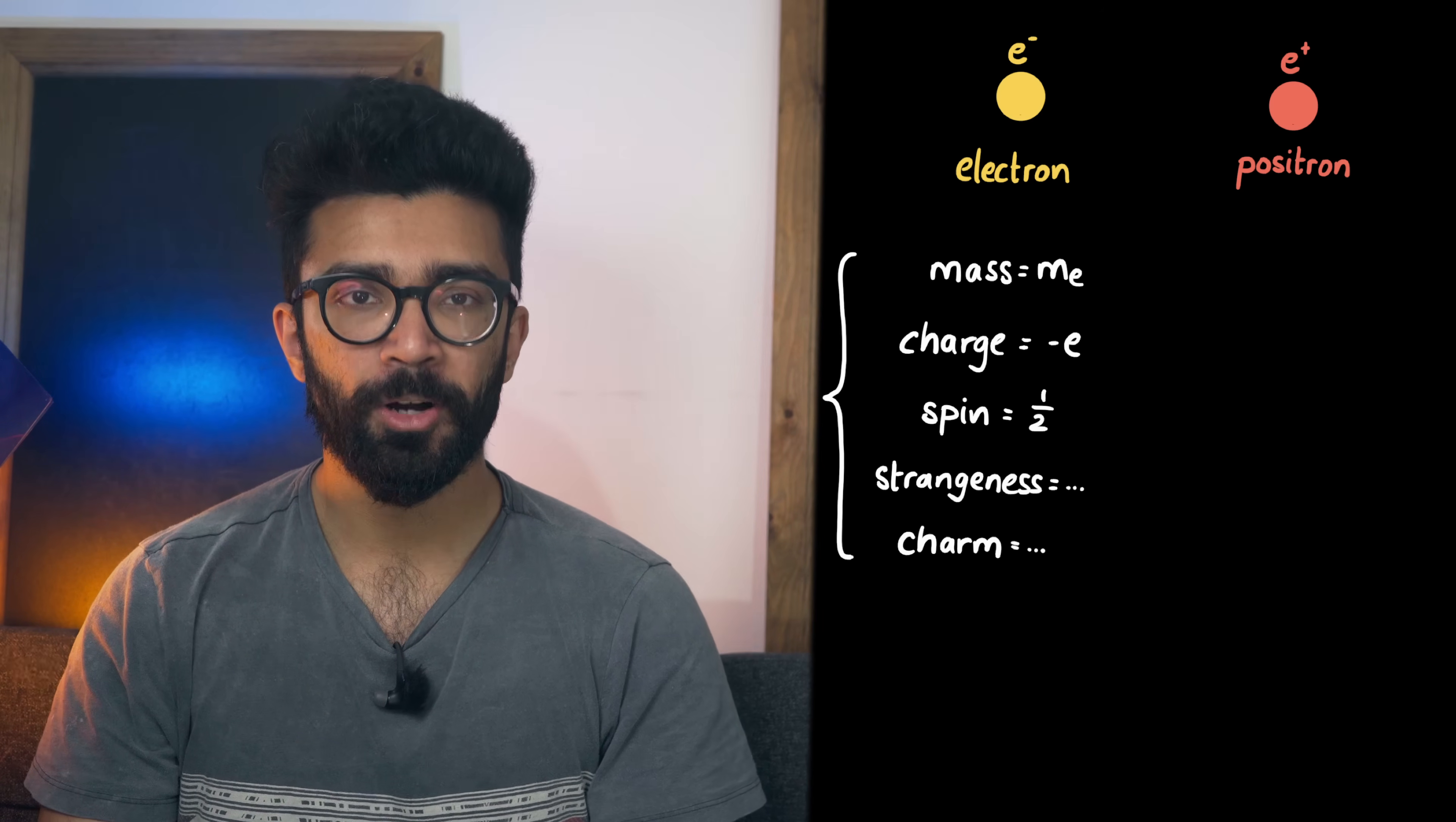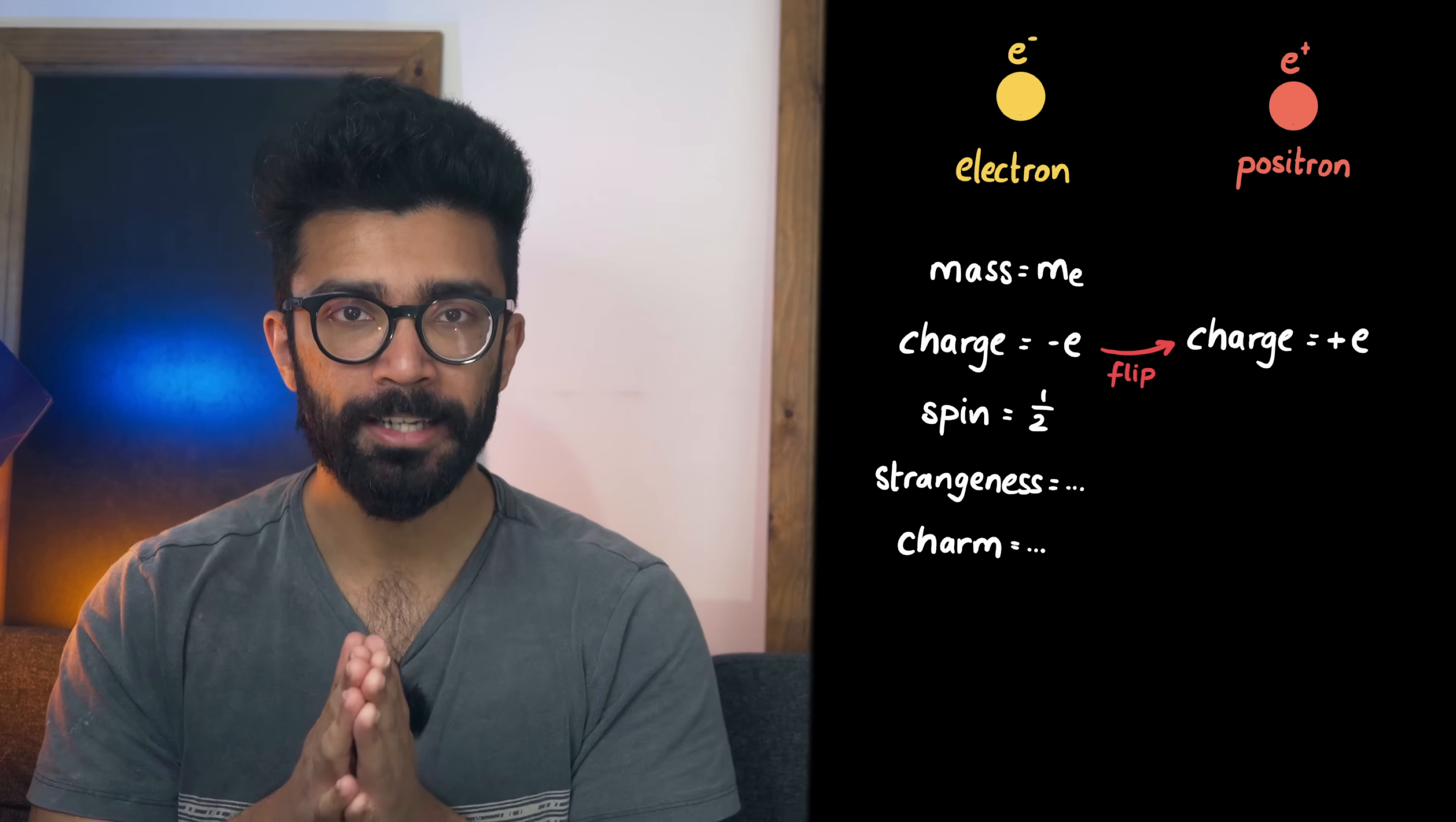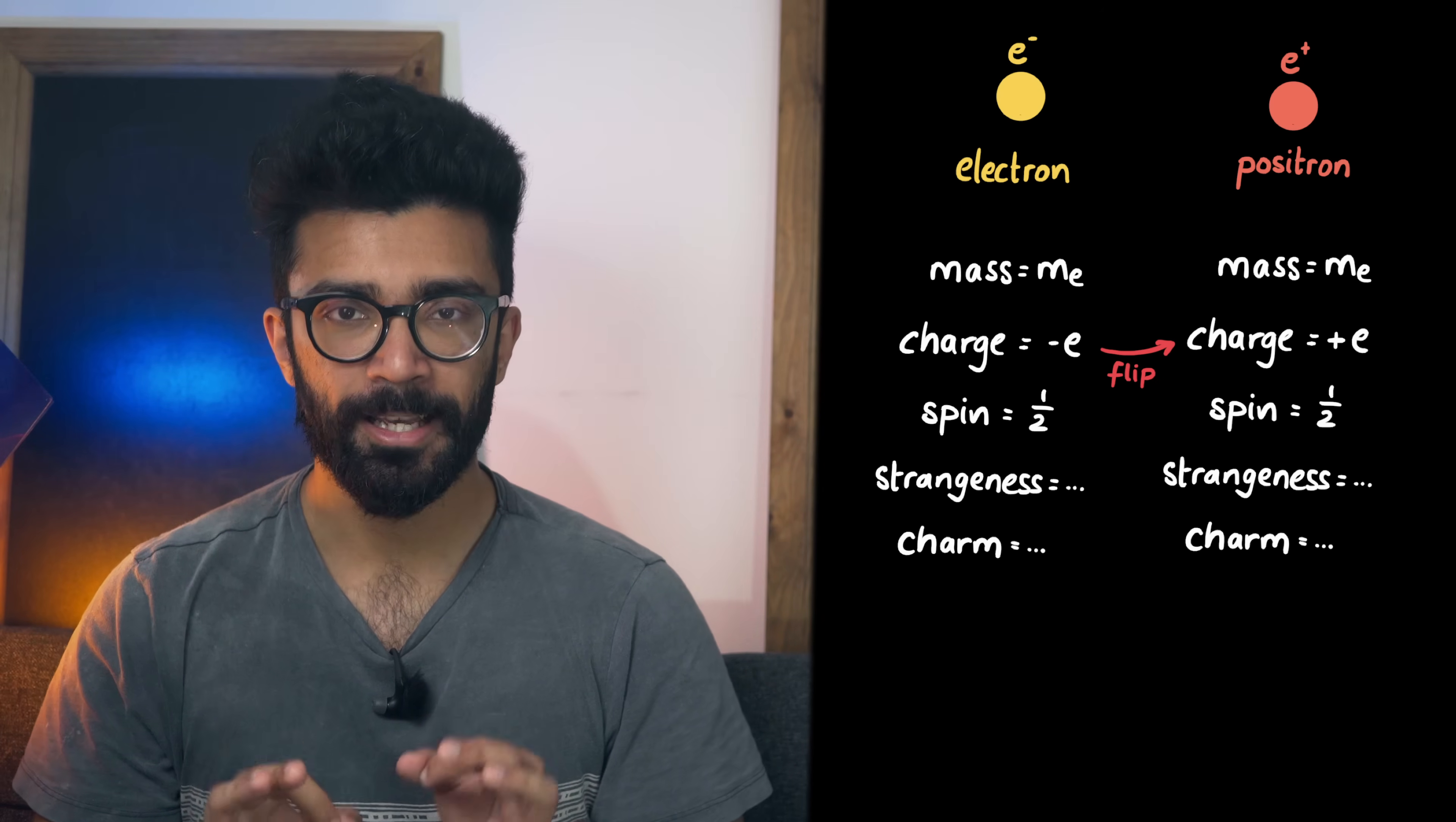But if we take this particle and flip its charge so from positive to negative or from negative to positive with the same magnitude or size then we're looking at a new particle that is known as the anti-particle of the first one. There's a bit more subtlety to it than that but for our purposes that's all that matters here. Same values of everything except charge.